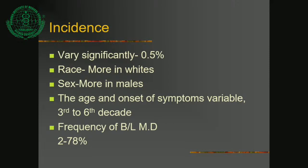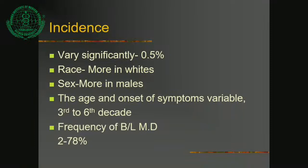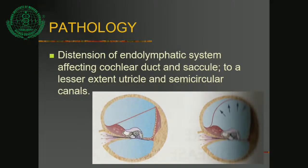The age of onset of symptoms is variable, typically the 3rd to 6th decade — roughly 35 to 60 years of age. The frequency of bilateral Meniere's Disease is 2 to 78%, but importantly, Meniere's Disease is mostly a unilateral disease. It involves distension of the endolymphatic system affecting the cochlear duct and saccule, and to a lesser extent the utricle and semicircular canals.